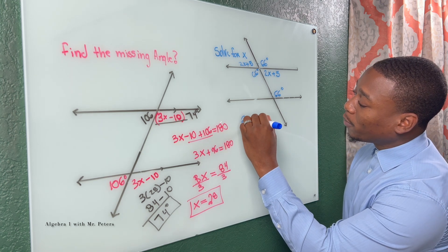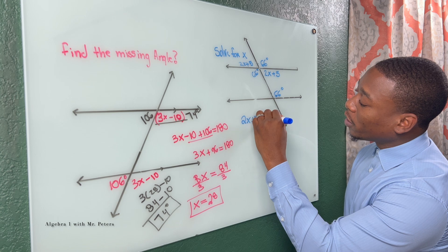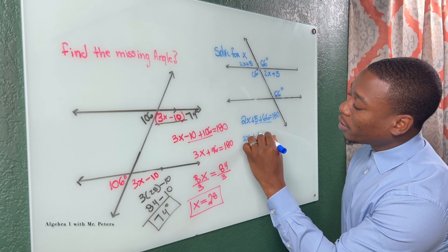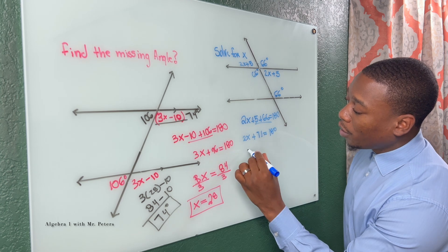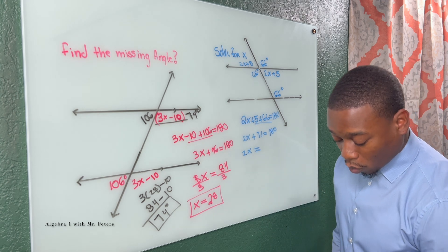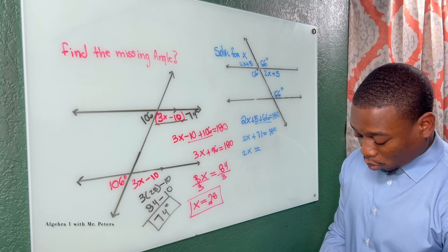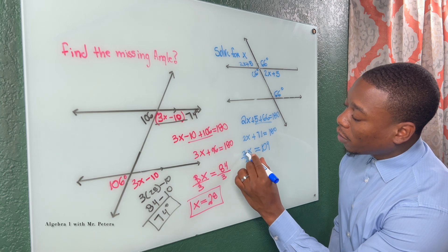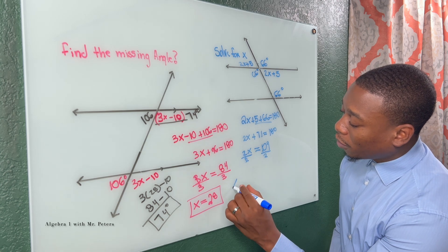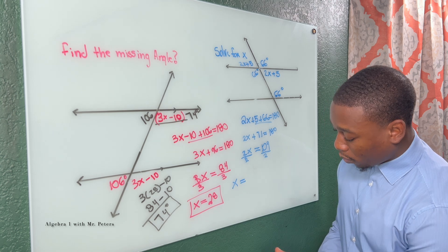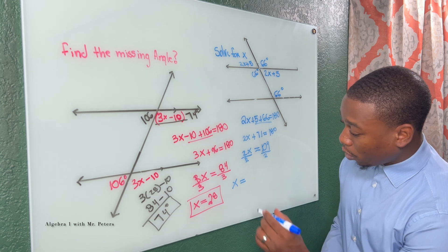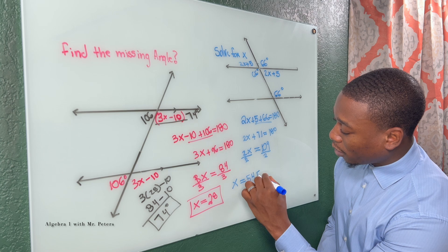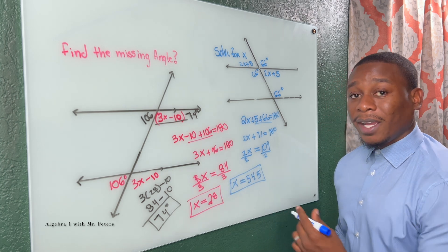So when we set our equation up, we have 2x plus 5 plus 66 is equal to 180. We simplify 2x plus 71 is equal to 180. Simplify one more time by subtracting 71. We know 2x is equal to 109. And now once we divide by 2 to get x by itself, we know x is equal to 109 divided by 2. All right, 54.5.